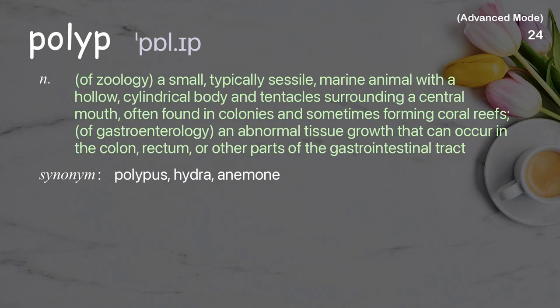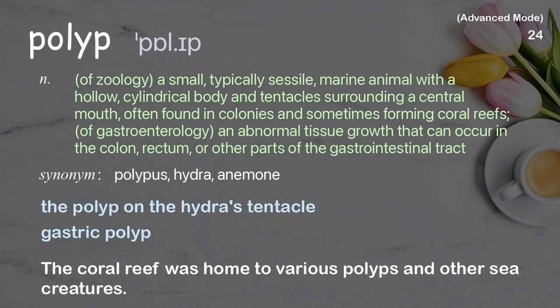Polyp: (Zoology) A small, typically sessile, marine animal with a hollow, cylindrical body and tentacles surrounding a central mouth, often found in colonies and sometimes forming coral reefs. (Gastroenterology) An abnormal tissue growth that can occur in the colon, rectum, or other parts of the gastrointestinal tract. Examples: The polyp on the hydra's tentacle. Gastric polyp. The coral reef was home to various polyps and other sea creatures.